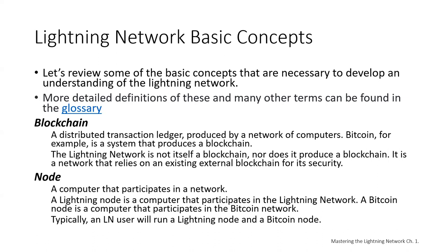Let's take a look at some basic concepts necessary to understand the Lightning Network. Some of this technical terminology might seem a bit confusing at first — if you don't understand all the words yet, that's okay. Our first term is blockchain, which we define as a distributed transaction ledger produced by a network of computers. Bitcoin is a system that produces a blockchain of Bitcoin transactions. The Lightning Network is not itself a blockchain, nor does it produce one. It is a network that relies on an existing external blockchain — Bitcoin — for its security.